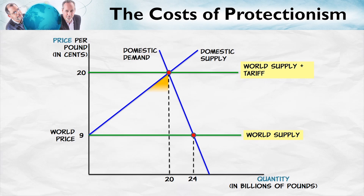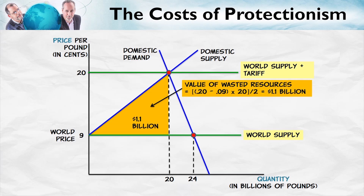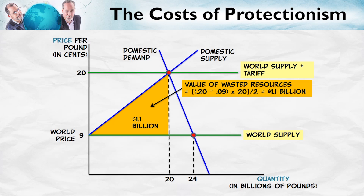With these numbers, we can calculate these areas. This triangle, for example, is half base times height. The base is 20, and the height is 20 minus 9. So the area of the triangle is half base times height, or 1.1 billion. The deadweight loss triangle uses the same calculation — it's 0.22 billion.